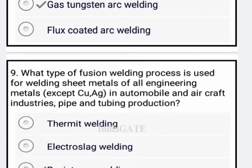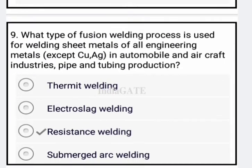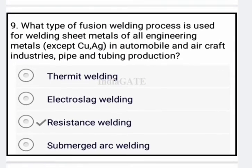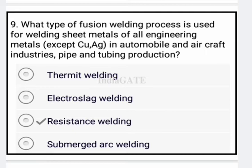Next: what type of diffusion welding process is used for welding sheet metals of all engineering metals excepting copper, in the automated and aircraft industry for pipe and tubing production? The correct answer for this question is resistance welding — option C is your correct answer.